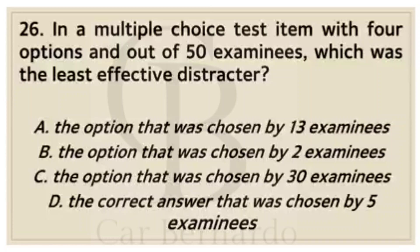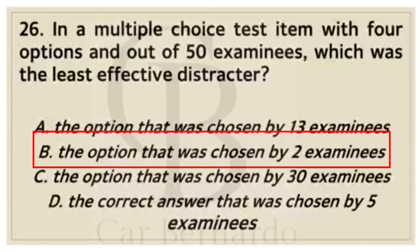Number twenty-six: In a multiple choice test item with four options and out of 50 examiners, which was the least effective distractor? Letter A: The option chosen by 13 examiners. Letter B: The option chosen by two examiners. Letter C: The option chosen by 30 examiners. Letter D: The correct answer chosen by five examiners. Answer: Letter B, The option chosen by two examiners.